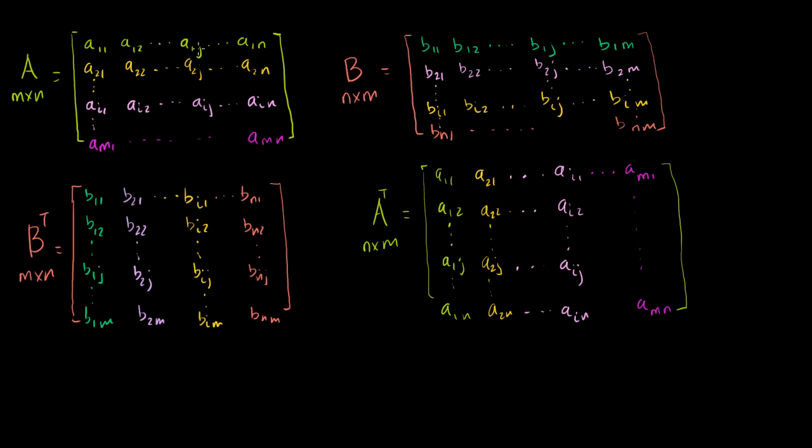This is the j-th column, so the m-th row is going to look like this, a_mj. That's that entry right there.